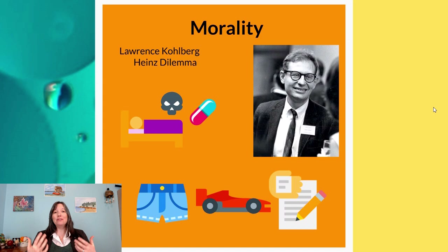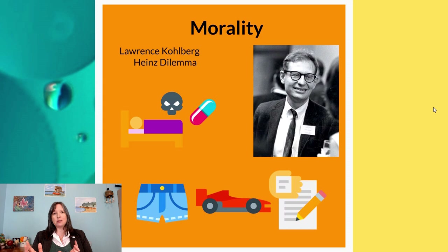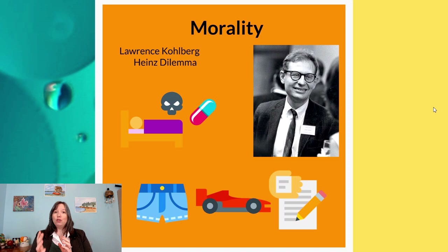Another theory is Lawrence Kohlberg's theory of morality. Kohlberg believed that the way we make tough ethical decisions changes over our development. He's most famously known for hypothetical situations like the Heinz Dilemma: Heinz lives in a small village where his wife is terminally ill. A pharmacist has discovered the cure but will not sell it at an affordable price. Heinz cannot get the money. Do you steal the medicine to save your wife, or do you let her die? Kohlberg believed it was less important what you chose and much more important why — the rationale you gave.